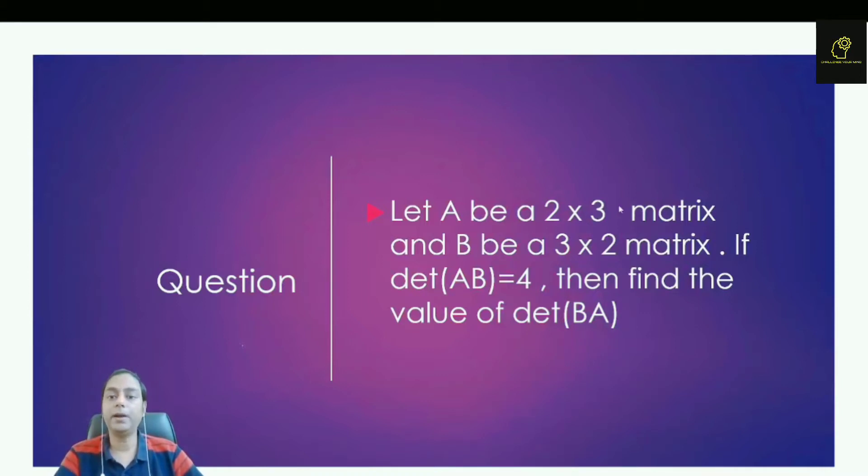The question is: Let A be a 2 into 3 matrix and B be a 3 into 2 matrix. If determinant of AB is equal to 4, then find the value of determinant of BA.